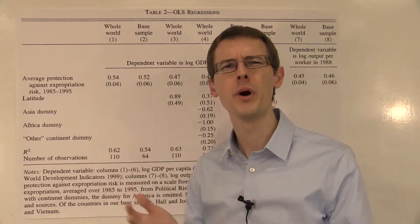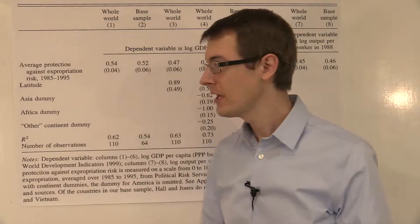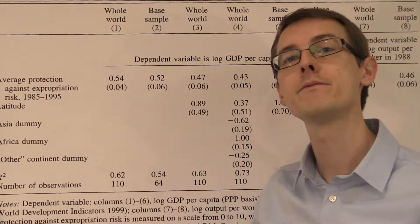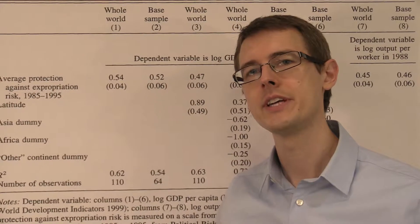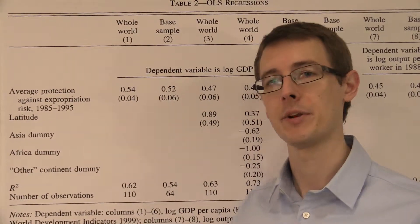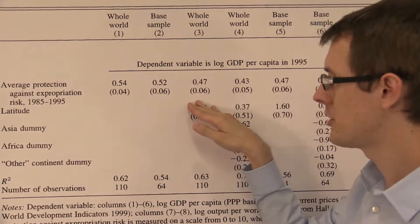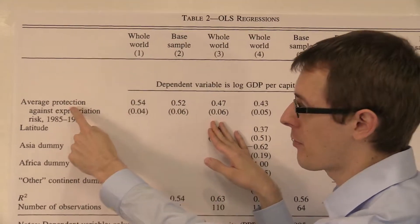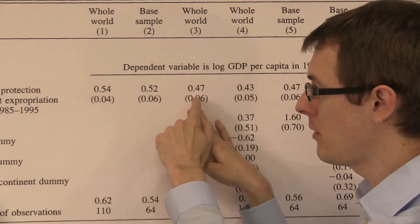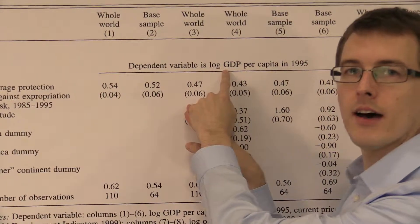First, how are they going to measure what we mean by geography? One way to do this is: how close is your country to the equator? That's what the variable latitude means — it's 0 if you're at the equator and increases as you get farther from it. So let's look at countries that are just close to the equator and see, for only those countries, what's the relationship between property rights and economic development. That's what this column shows us. If we look at countries with the same latitude, we get a relationship between property rights and economic development of 0.47 — again, a positive relationship.